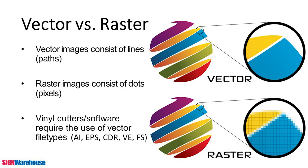The good news is there is a workaround. While it would be ideal to always find a vector version of the design you want to cut, sometimes that's just not an option. You may find a must-have image online that fits your client's request perfectly, but only comes as a JPEG, which is a raster image. Fortunately, VE LXI has tools that will help vectorize that raster image, turning it into something that you can cut.